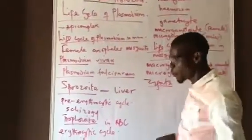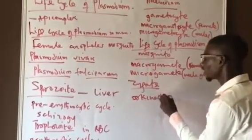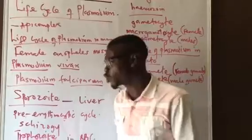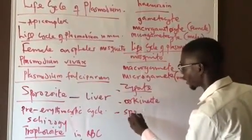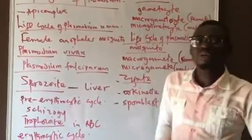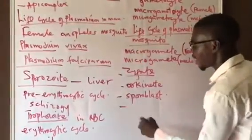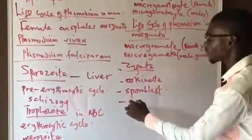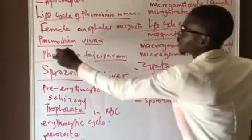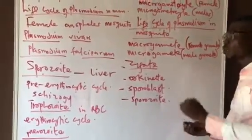The zygote is motile and forms what we call the ookinete. The ookinete goes directly to form a sporoblast — the ookinete encysts to become the sporoblast. The sporoblast then carries out cell division to form sporozoites. The sporozoites break out of the cyst and migrate to the salivary gland of the mosquito, where they can easily be injected into the body of man.